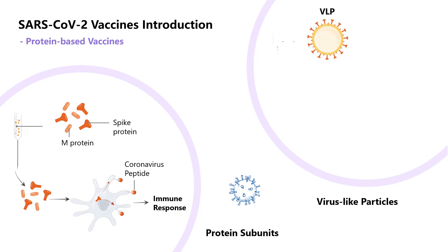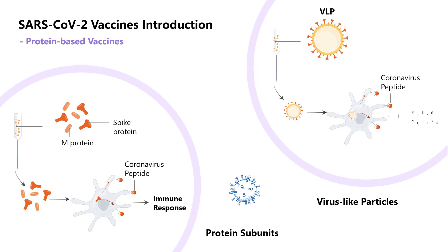The virus-like particle vaccine is prepared from VLPs. VLPs are empty shell structures that do not contain viral nucleic acids. They retain the spatial conformation of natural virus particles and the epitope that induces neutralizing antibodies. They have strong immunity, and can not only stimulate humoral immunity, but also stimulate cellular and mucosal immunity.